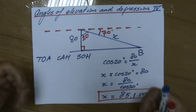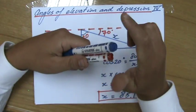X equals 85.1 meters. I hope that was useful. Ask me a question if you have any and I'll try to help you. See you soon.